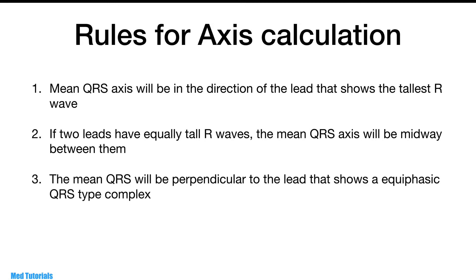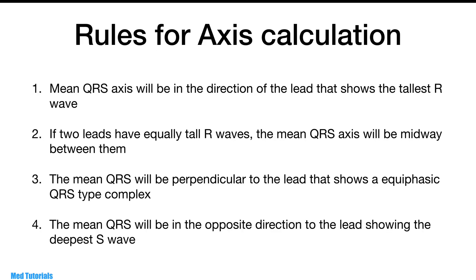Third, the axis will be perpendicular to the lead having an equiphasic QRS complex. So if you have a lead with a QRS complex that has an R and an S of equal amplitude, the mean QRS axis will be perpendicular to that lead. The fourth rule is the mean QRS complex is usually opposite in direction to the complex that shows the deepest S wave.